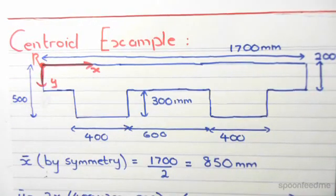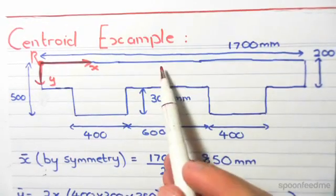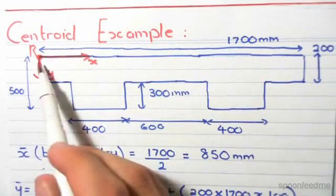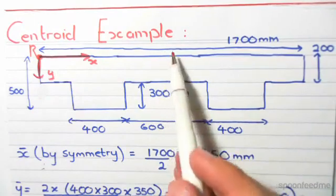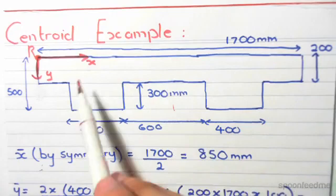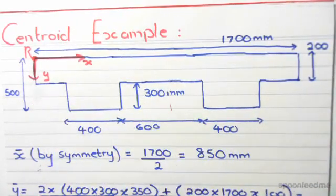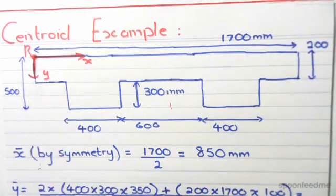How do we find x-bar? If you look at this section, it's symmetrical, so immediately you can tell that horizontally the centroid is 850 millimeters from this reference point, just straight in the middle. X-bar is 850 millimeters, so the center of all the structure horizontally from the reference point is 850 millimeters by symmetry with respect to this reference point.